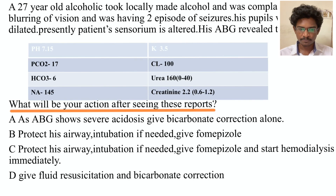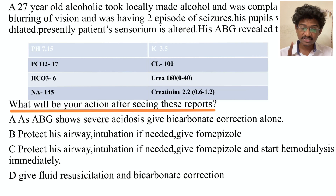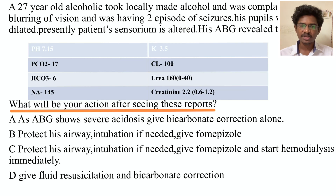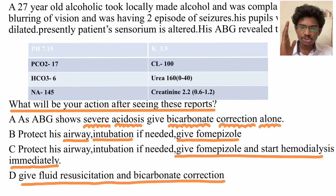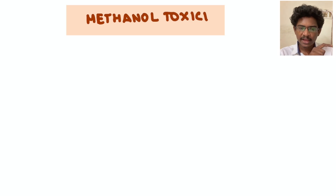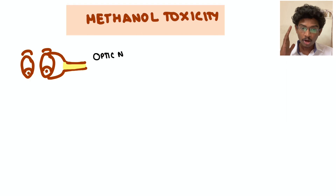Management options: (A) bicarbonate correction alone; (B) protect airway, intubate if needed, give fomepizole; (C) same steps with hemodialysis if necessary immediately; (D) fluids and bicarbonate correction only. In methanol toxicity, when the patient has high anion gap metabolic acidosis, blurring of vision due to toxic optic neuritis, or deranged KFTs with acute renal failure — you should go instantly for hemodialysis.